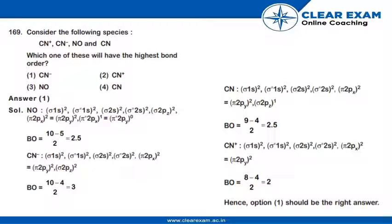The bond order of CN comes out to be 2.5, and the bond order of CN positive comes out to be 2. So the correct answer is option 1.